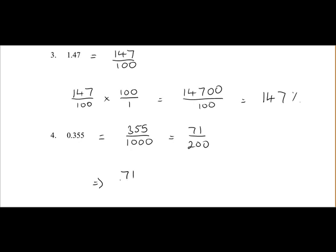To get the percentage, 71 over 200 multiplied by 100 over 1. That's 7,100 over 200, which is equal to 35.5%.